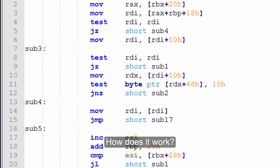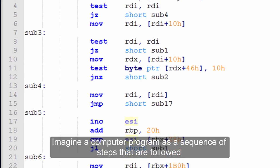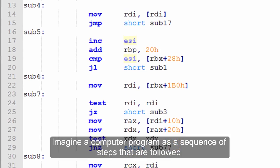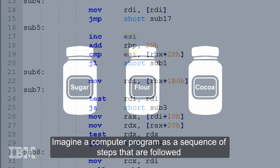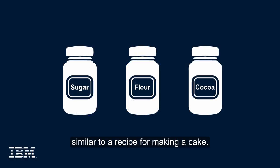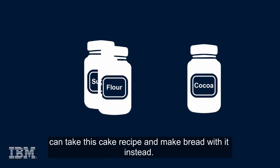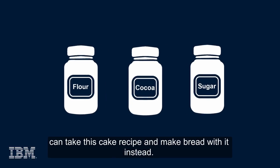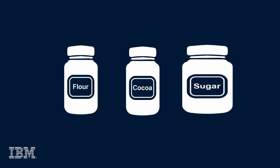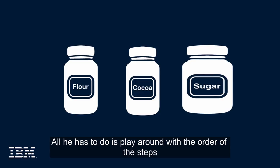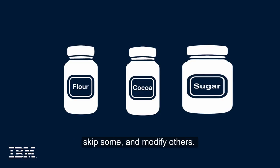How does it work? Imagine a computer program as a sequence of steps that are followed, similar to a recipe for making a cake. An attacker who studied our recipe book and kitchen cabinets can take this cake recipe and make bread with it instead. All he has to do is play around with the order of the steps, skip some, and modify others.